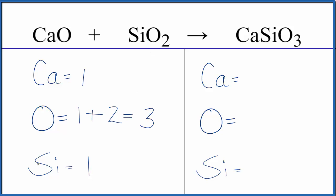Si, we have one of those. Product side, we have one calcium, then oxygens, we have three of those. Si, we have one of those.